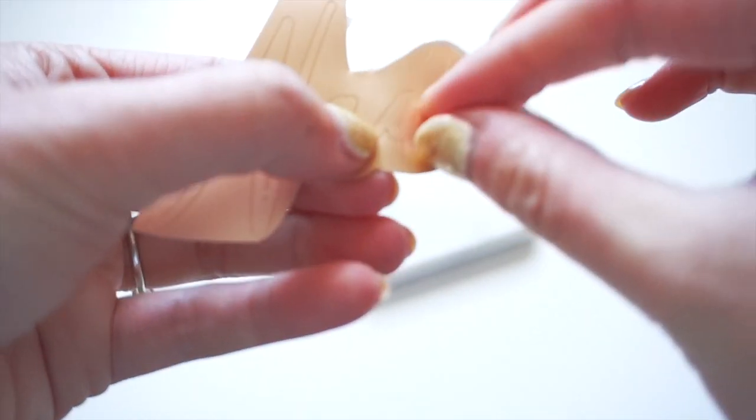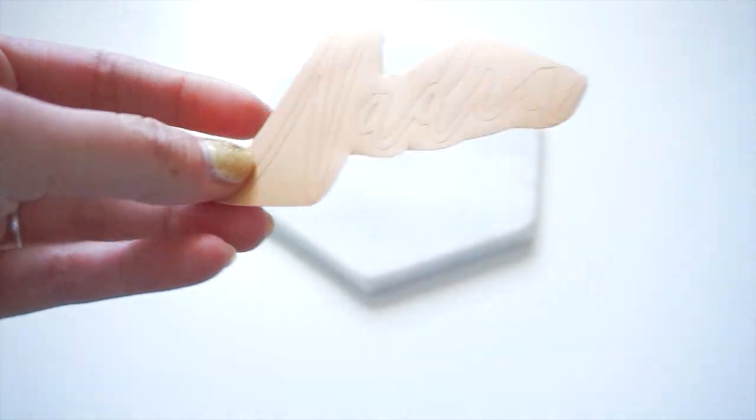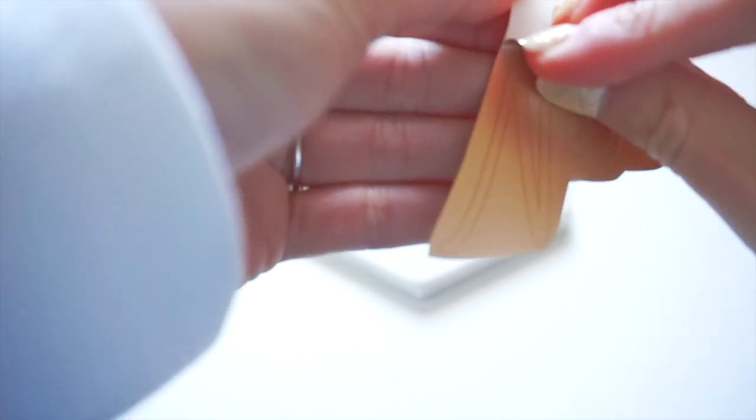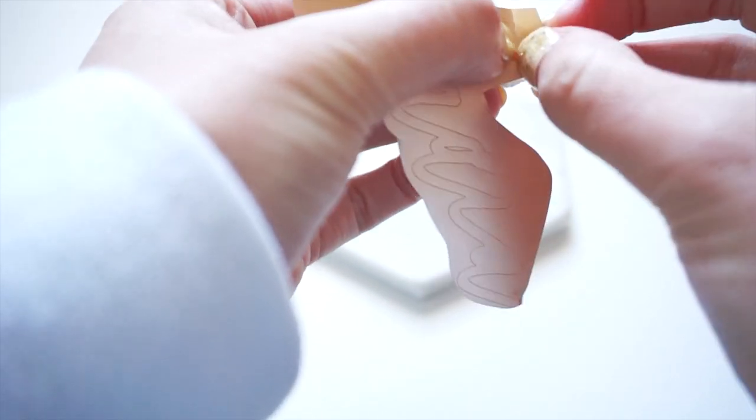Next, you'll want to weed out your design like so. After you've done that, you want to use transfer tape to transfer the design over to your coaster.